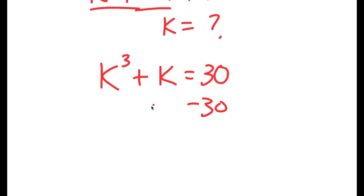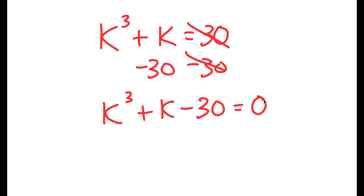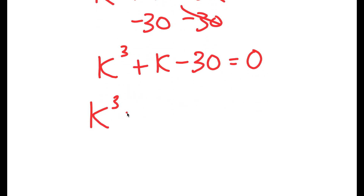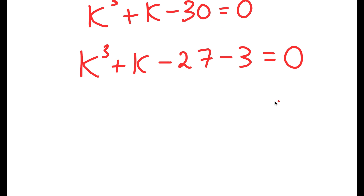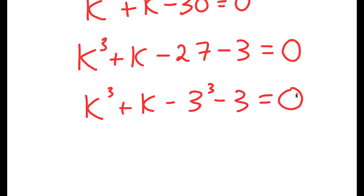Now I'm going to subtract 30 on both sides, so I get k to the power of 3 plus k minus 30 is equal to 0. I'm going to rewrite this as k to the power of 3 plus k minus 27 minus 3 is equal to 0. And 27 is the same thing as 3 to the power of 3, so I get k to the power of 3 plus k minus 3 to the power of 3 minus 3 is equal to 0.